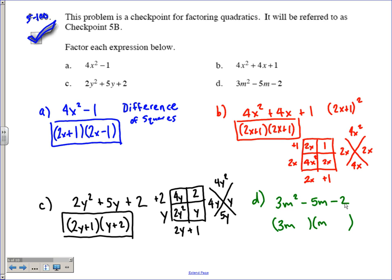We know the first term only has the factors of 3m and m. And our last term, since it's 2 and it's prime, we know it can either be a 2 here and a 1, or a 2 here and a 1 back here. Either way I need to have a difference that ends up being negative 5. So if I do a 2 here, a 1 here, if I make this a negative and this one a positive, I should end up with exactly what I need.